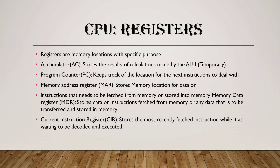Registers are memory locations with specific purposes. The Accumulator stores the result of calculations made by the ALU in temporary memory locations. The Program Counter keeps track of the location of the next instruction to be executed. The Memory Address Register stores the memory location for data. The Memory Data Register stores data or instructions fetched from memory or any data to be transferred and stored in memory. The Current Instruction Register stores the most recently fetched instruction while it is waiting to be decoded and executed.